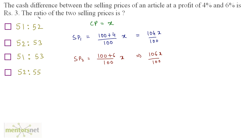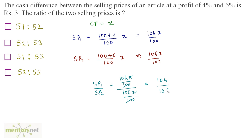What is asked is the ratio of these two selling prices: SP1 / SP2 = (104X / 100) / (106X / 100). The hundreds and X cancel out, giving us 104 / 106. Dividing both numerator and denominator by 2, we get 52 / 53. So the ratio is 52 : 53, which is option 2.